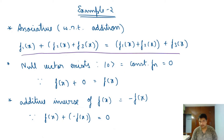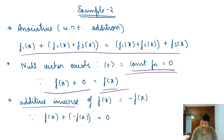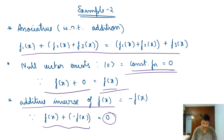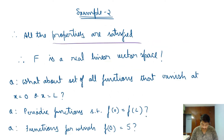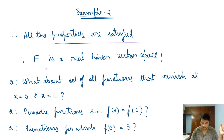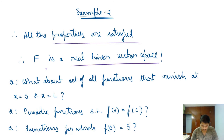The associative and commutative properties with respect to addition are satisfied. The null vector is the constant function equal to zero — adding it to any function returns that function. The additive inverse of f(x) is −f(x), since their sum gives the null vector. Therefore all properties are satisfied, and F is a real linear vector space defined over a real field.